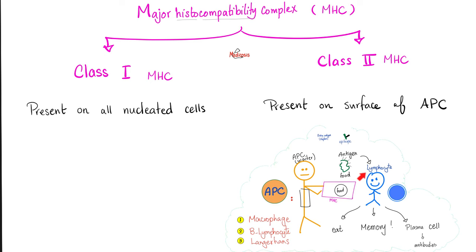And who is the customer? The lymphocyte. The customer has many options: the customer will eat the food, the customer will remember the food as memory cells, and the customer can become plasma cells which secrete antibodies. MHC is present on all nucleated cells — that's the redundant one — and uniquely on antigen-presenting cells.